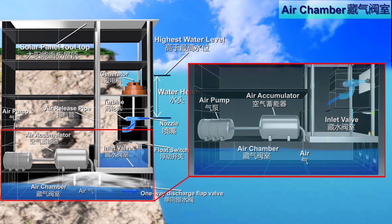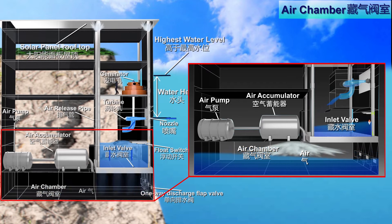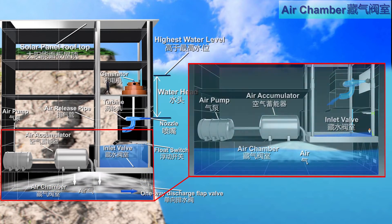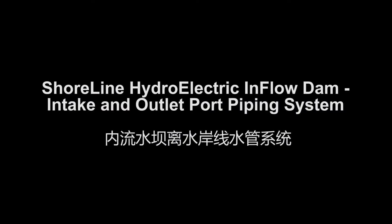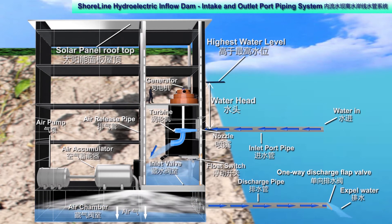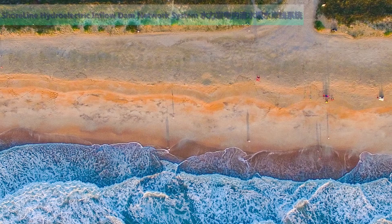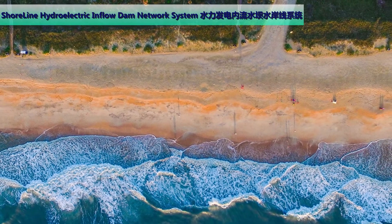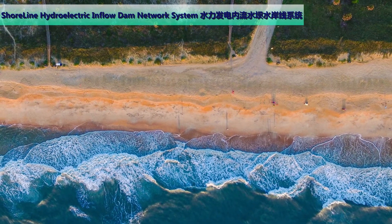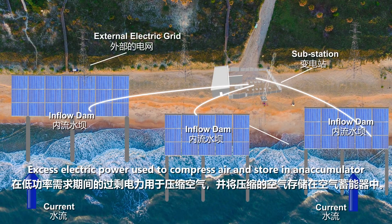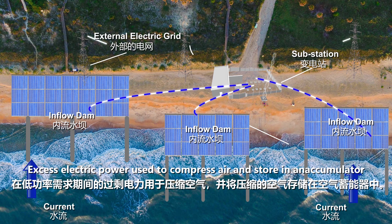With continuous charging of water inside the inflow dam, rotation of the turbine is non-interrupted and electric power generation is continuous. The inflow dam can be located along a coastline, or it is possible to locate it a distance inland from the coastline, which can lower construction costs and minimise any adverse environmental impact. Adjoining each inflow dam is a substation where the outputs of the generators and solar panels or wind turbines are coupled to the external electric grid.